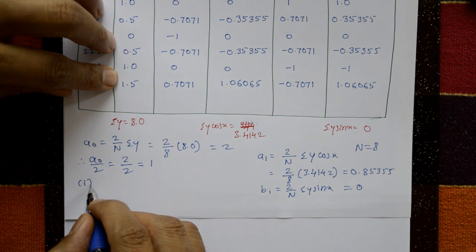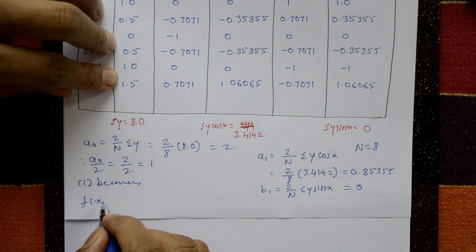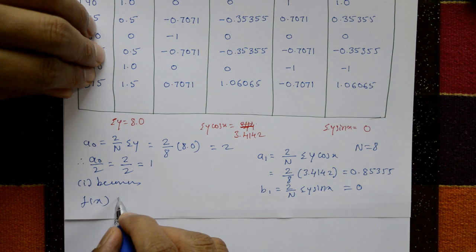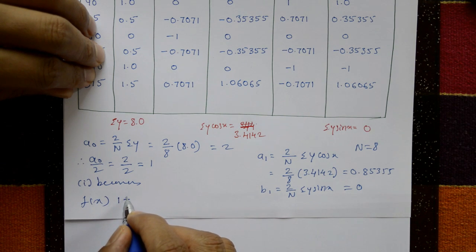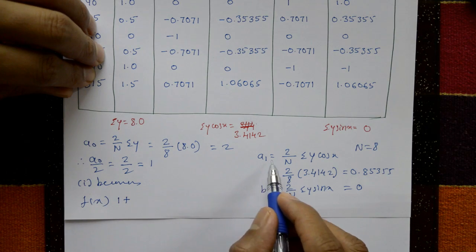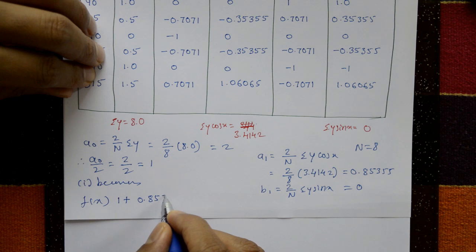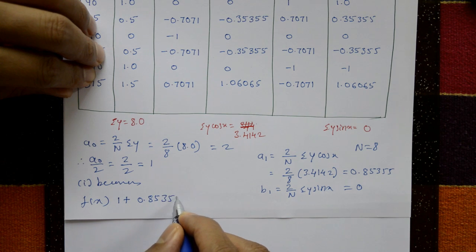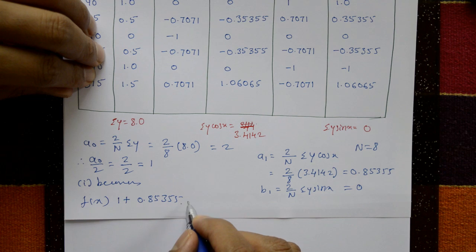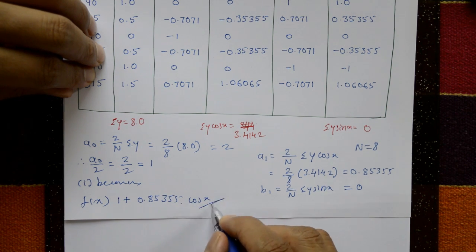Substituting into equation 1, the required solution is: f(x) = a₀/2 + a₁·cos x = 1 + 0.85355·cos x. This is the first harmonic of the Fourier series.